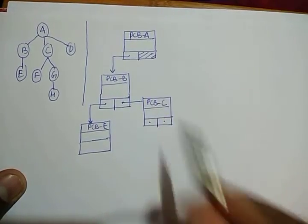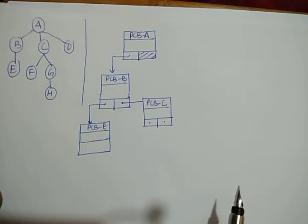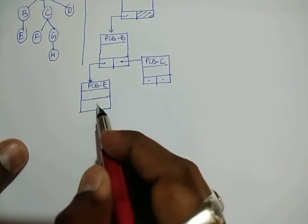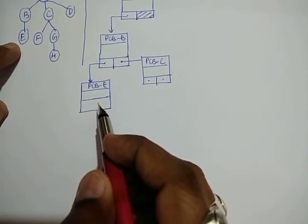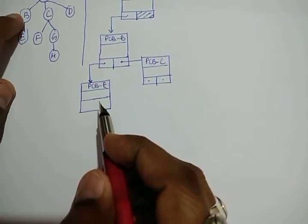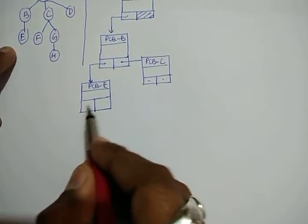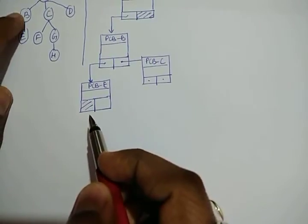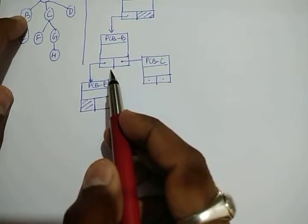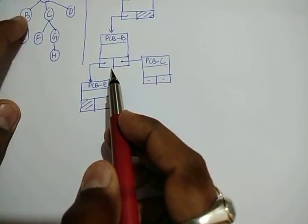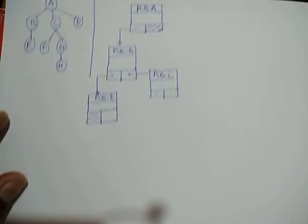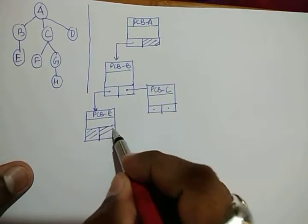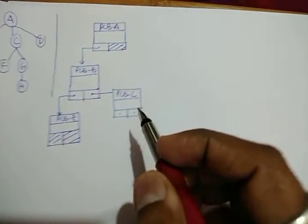Now looking at E: E does not have a left child, so that field will be null. The parent of E is B, and B does not have any further child beyond E, so the second field of E's PCB will also denote null.